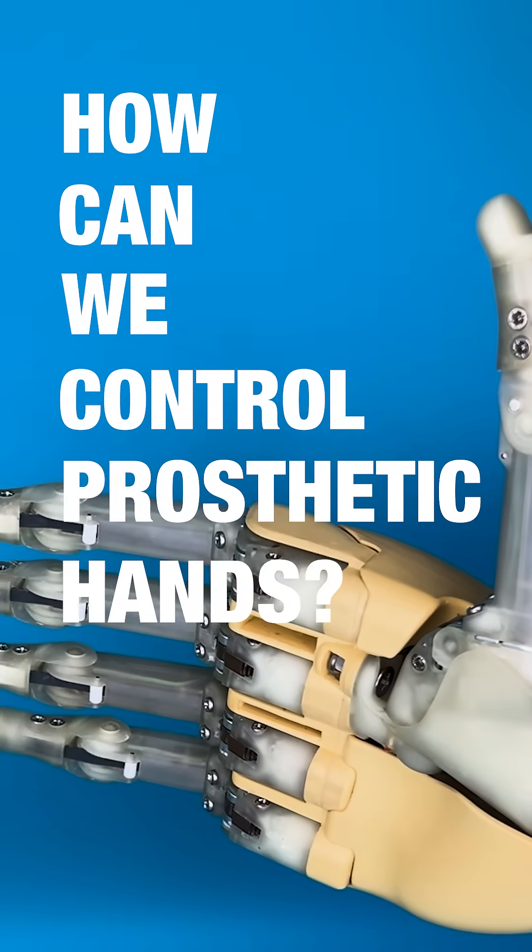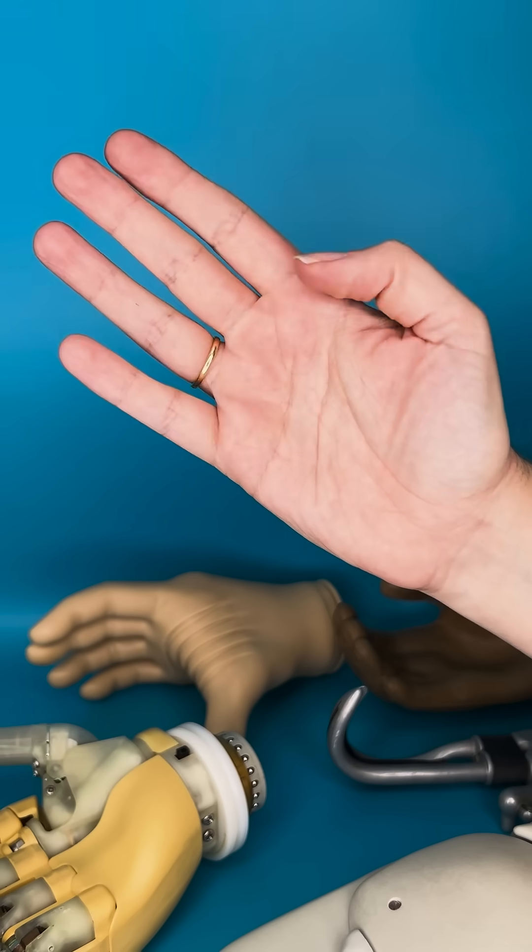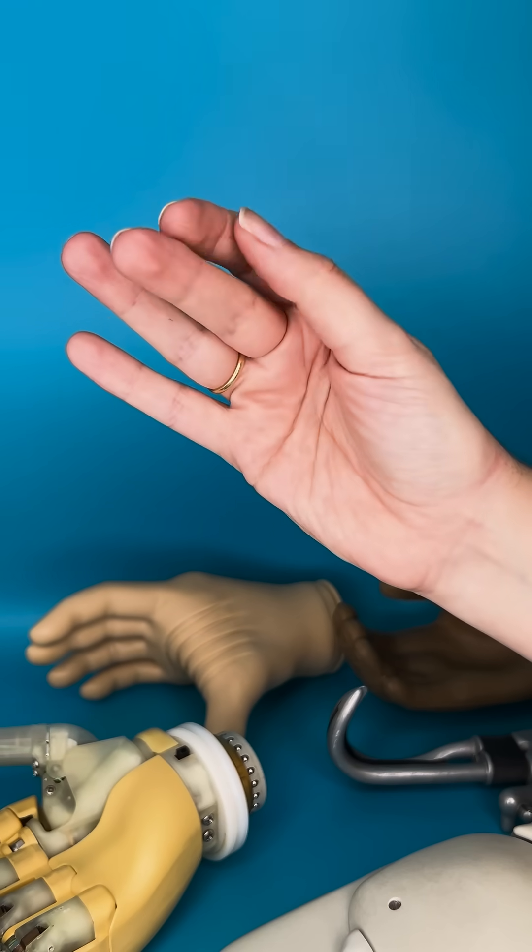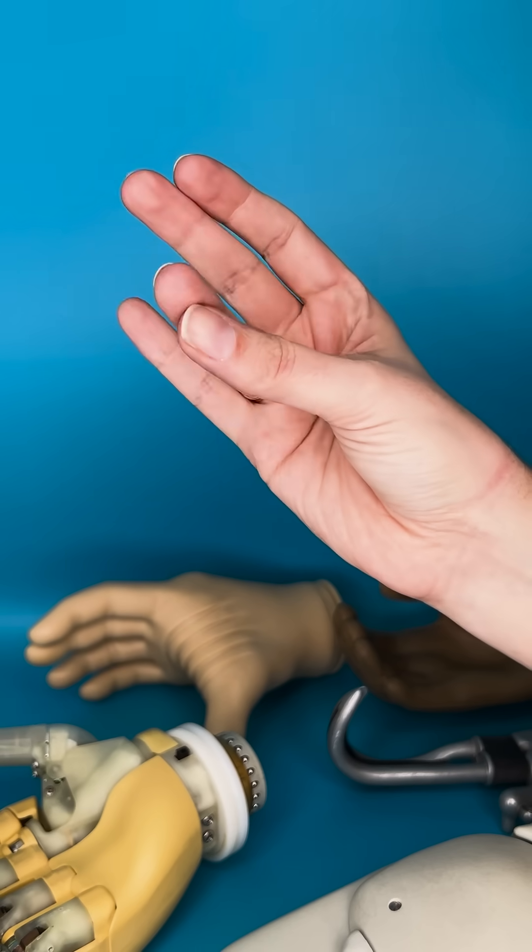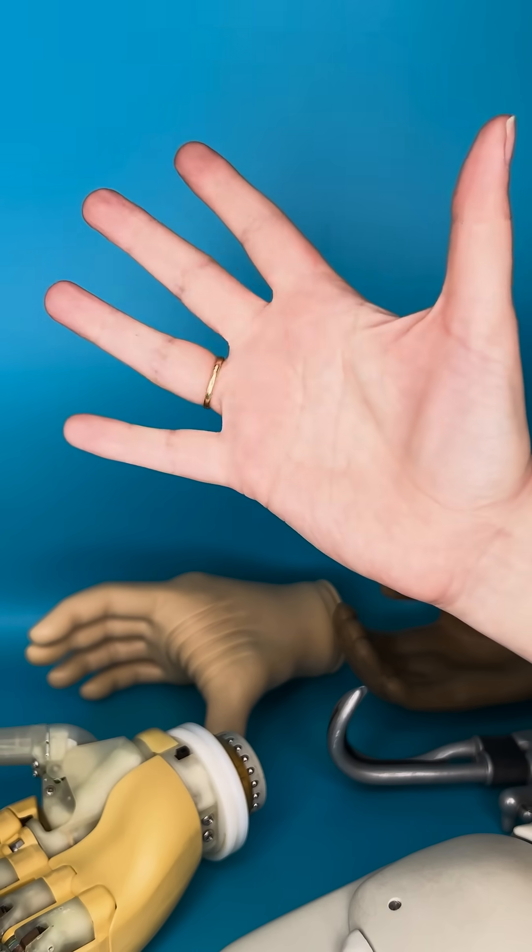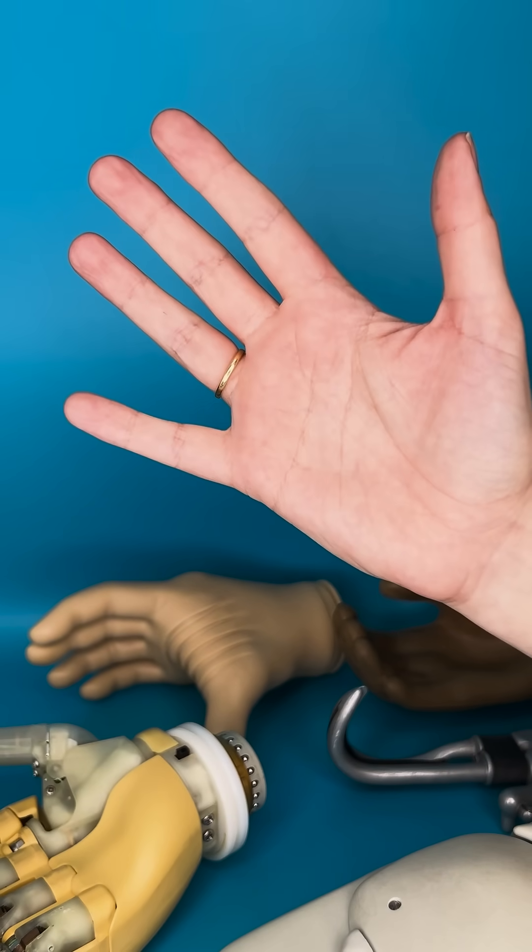How can we control prosthetic hands? Think about all the things that you can do with your hand, all the different movements it can make, and the challenges we face as engineers when we're designing a hand for someone who was born without one or who may have lost one in an accident.